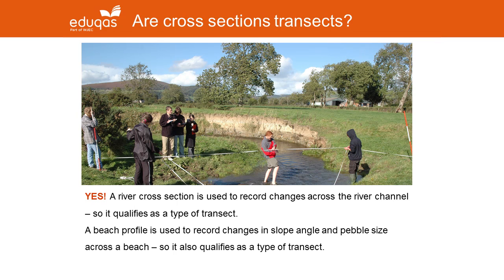Another question I've been asked is whether cross-sections are transects, and the answer is yes. It's an example of a small transect, as shown in the screenshot here, where students are collecting data across a river channel. A beach profile would be another example, recording evidence of pebble size from the low tide to the high tide mark. Students would typically draw a cross-section of that profile, and that would also qualify as a type of transect.